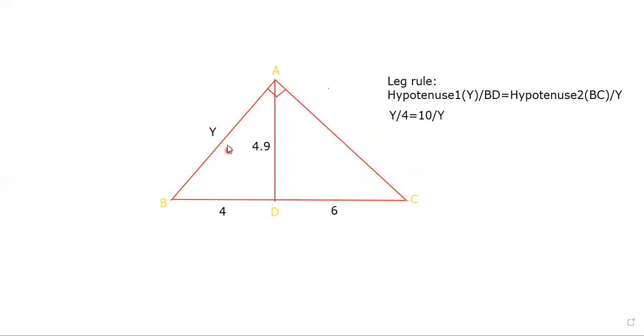When we substitute, we get y over 4 equals 10 over y. When we simplify, we get y equals the square root of 40.